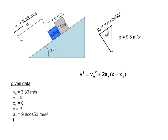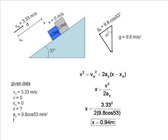This equation will allow us to solve for x. Since v and x0 are equal to zero, we will eliminate them from the equation when we isolate x. Now we can plug in our values, and we can find our answer. The objects will travel up the slope 0.94 meters before coming to rest.